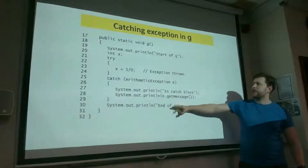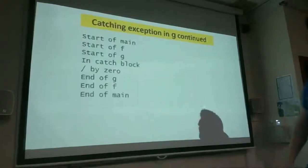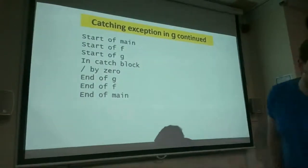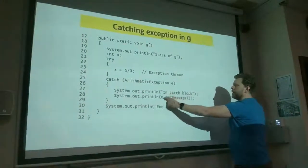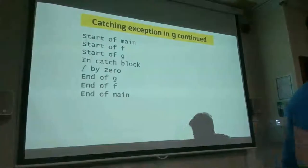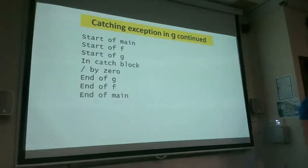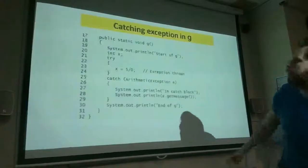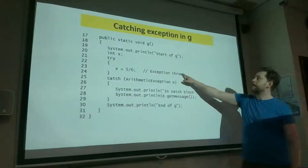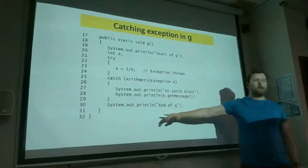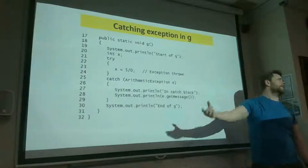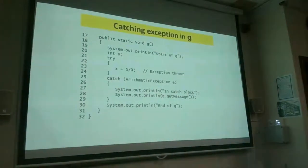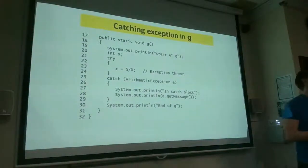Now when we run the code, we get: start of main, start of f, start of g, then in the catch block we print the division by zero message — but the code hasn't crashed. It handles that line, then continues: end of f, end of main. The program didn't work correctly, but it did not crash. That in its essence is what exception handling is.